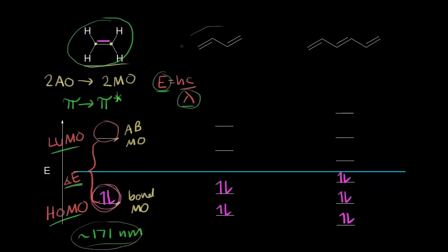Let's move on to 1,3-butadiene, which has four carbons. Each one of those carbons is sp2 hybridized, so each has a p orbital. We have four p orbitals, or four atomic orbitals, which recombine to form four molecular orbitals: two bonding and two antibonding. The two bonding molecular orbitals are lower in energy than the two antibonding ones. We have a total of four pi electrons for butadiene, which occupy the two bonding molecular orbitals.